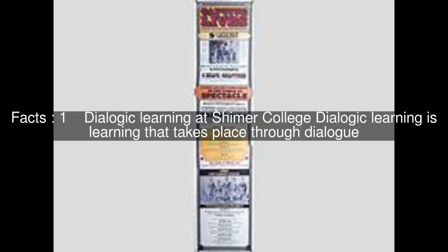Dialogic learning at Shimmer College. Dialogic learning is learning that takes place through dialogue. It is typically the result of egalitarian dialogue — in other words, the consequence of a dialogue in which different people provide arguments based on validity claims and not on power claims.